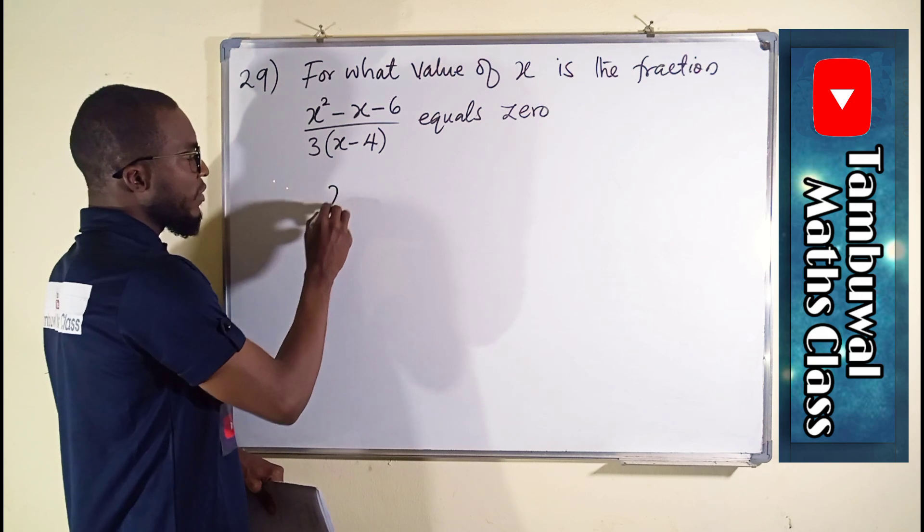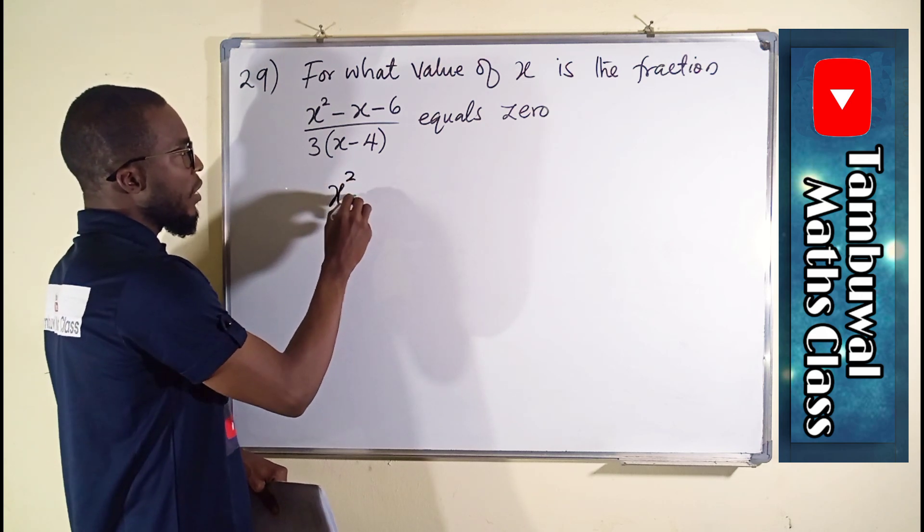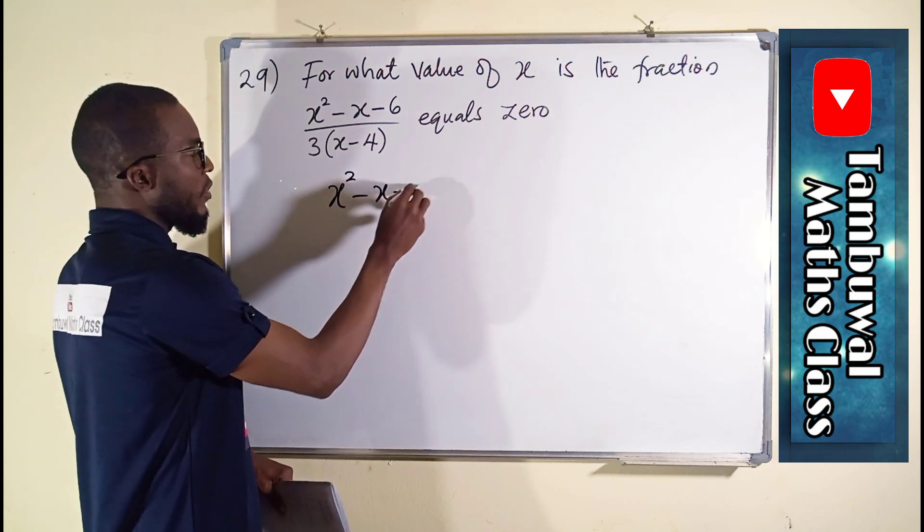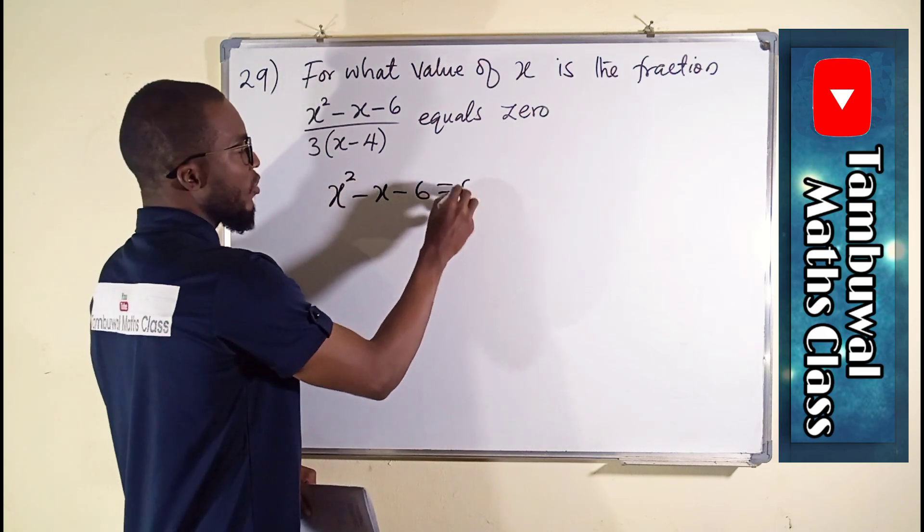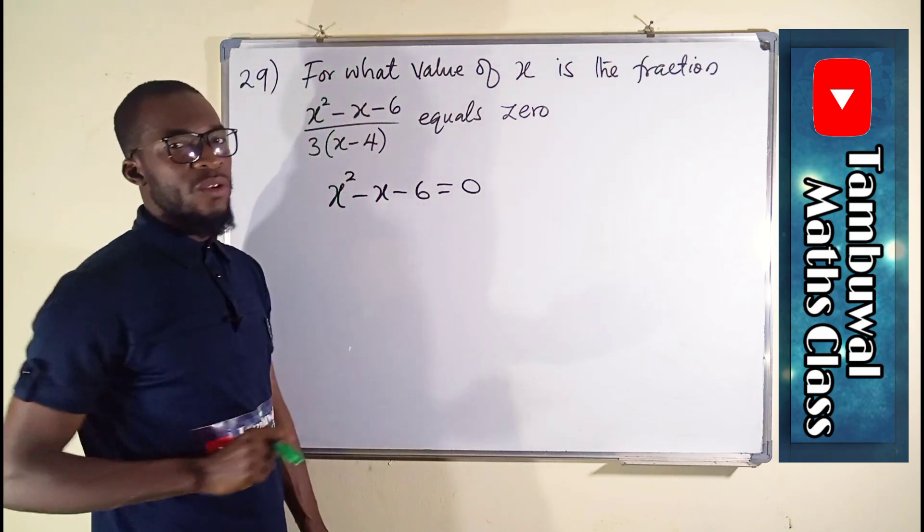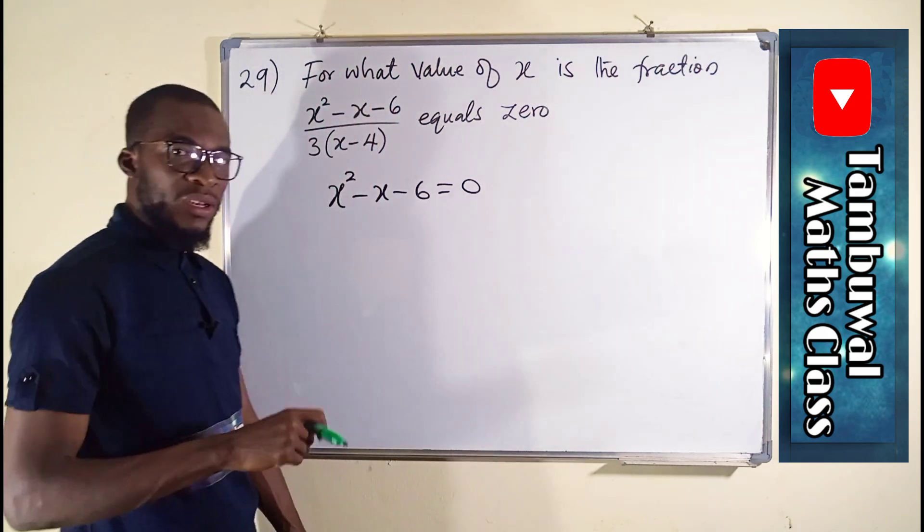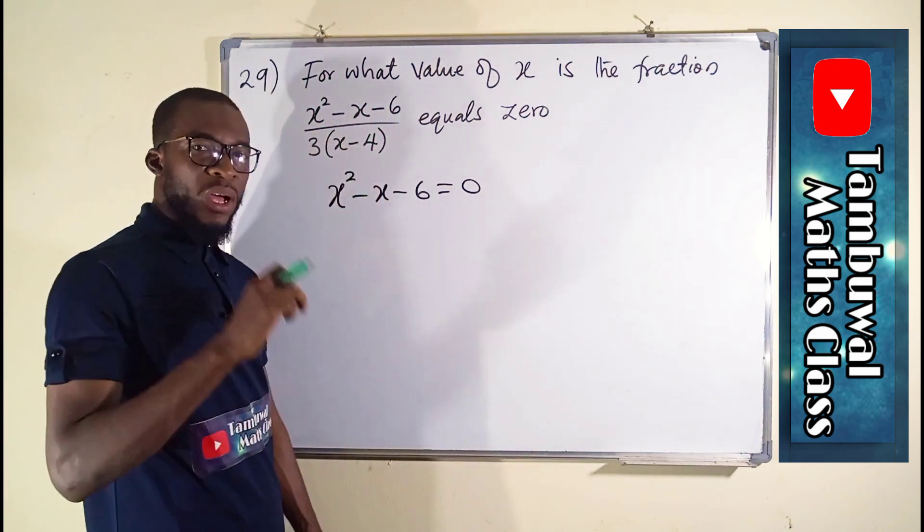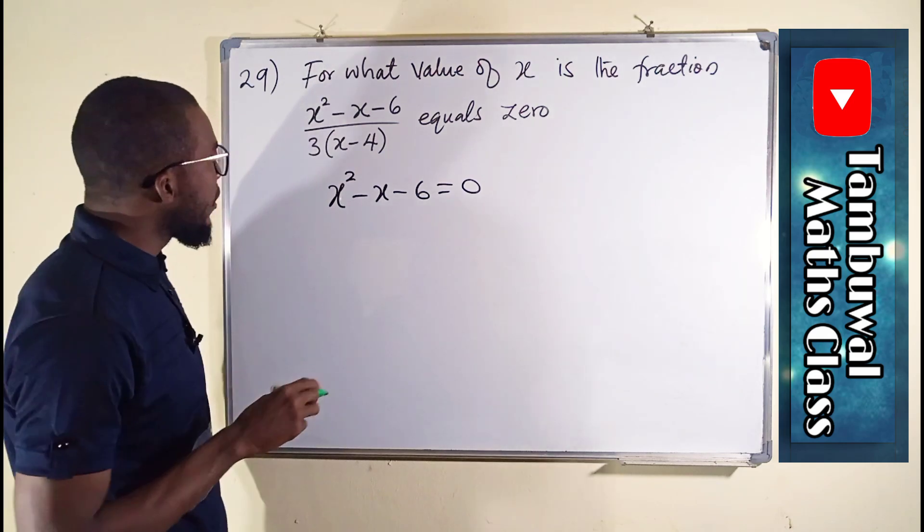We are going to take this numerator, x squared minus x minus 6, and set it to be equal to 0. That is the only condition for this fraction to equal 0. But if it is undefined, we take the denominator and set it to be equal to 0.